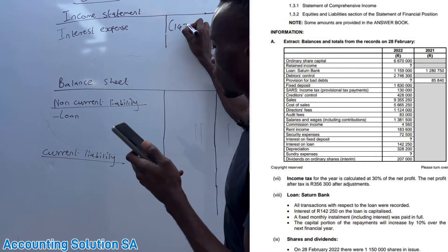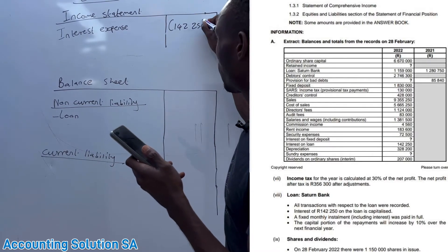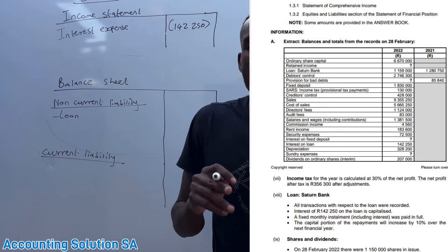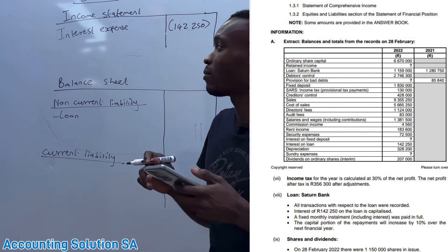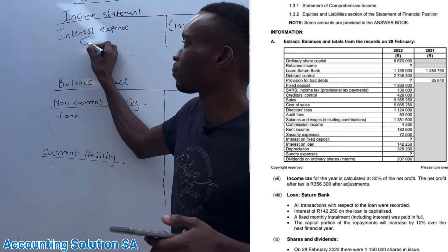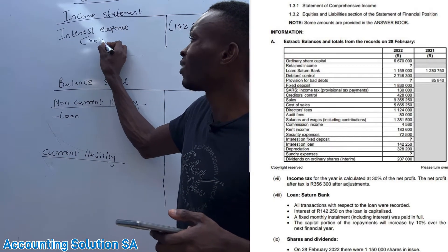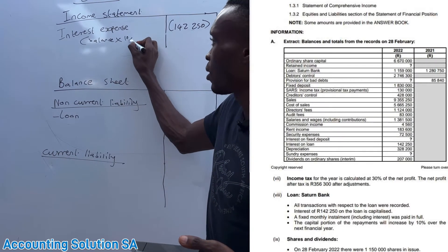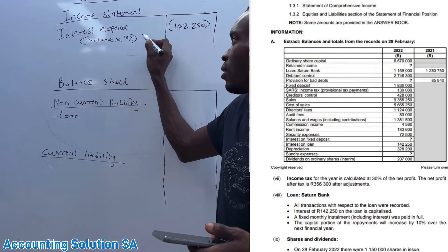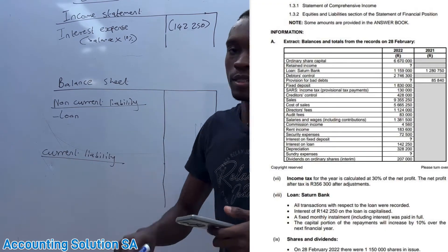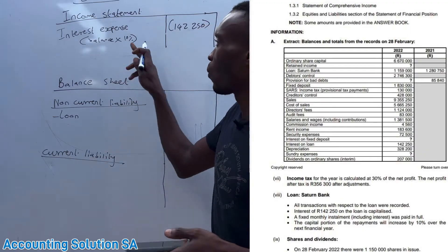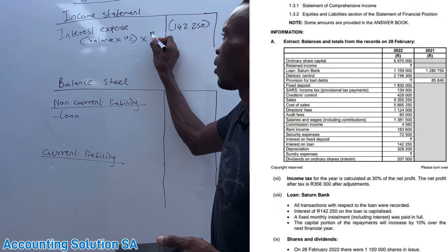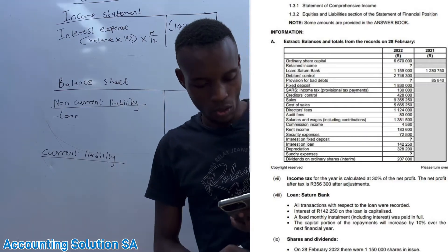For interest, it is simple. If they just give you the percentage and the balance at the beginning, you just say the balance times the percentage to get the interest — unless they took a loan during the year, where you also need to account for the months out of 12.